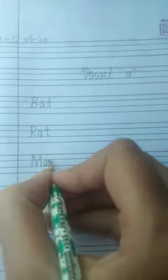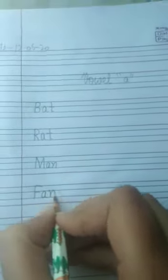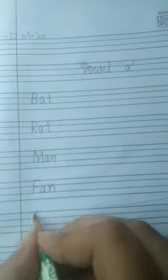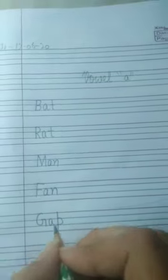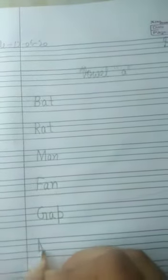Like B-A-T bat, R-A-T rat, M-A-N man, F-A-N fan, G-A-P gap, M-A-P map.